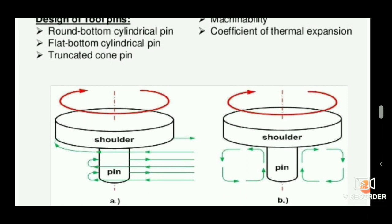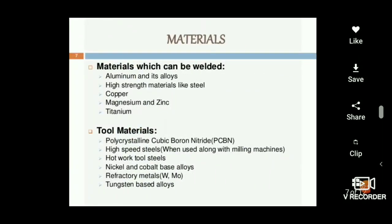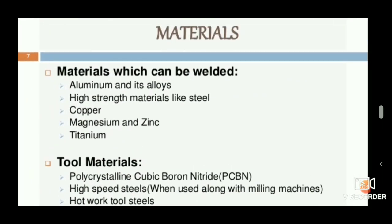The materials that can be welded include aluminium and its alloys, copper, high-strength materials, and titanium. An important characteristic of this process is that it can weld titanium and high-strength materials, since it only heats the material through friction, making the material plastic so it can be welded.